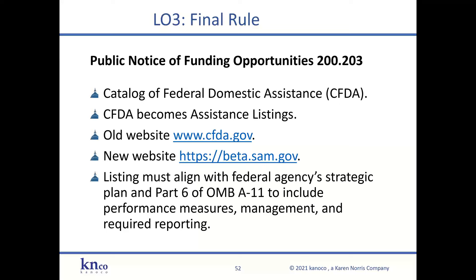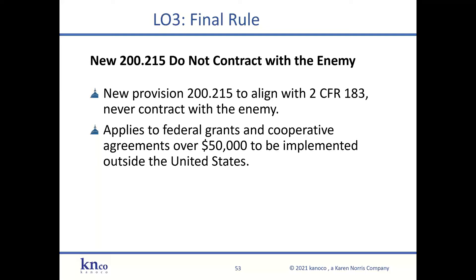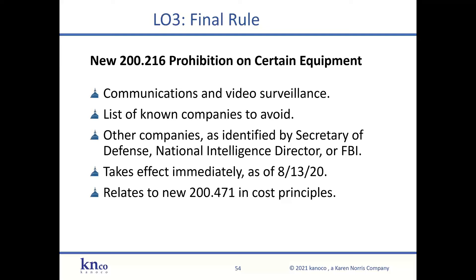The new 200.215, 'Do Not Contract with the Enemy,' applies to federal grants and cooperative agreements over $50,000 awarded outside the United States. Agencies such as the Department of State, National Science Foundation, USDA, and even the Department of Education with teacher exchanges have many international grants. The new 200.216 is the prohibition on certain telecommunications and video surveillance equipment — the forbidden equipment from manufacturers who sell merchandise to terrorist organizations. This also affected 200.471 in the cost principles, specifying the allowability of such equipment purchases.